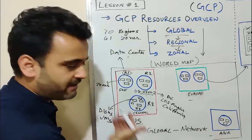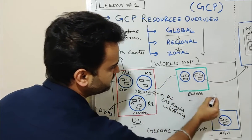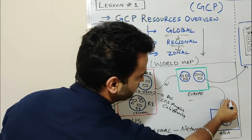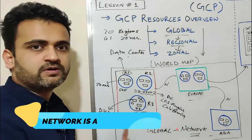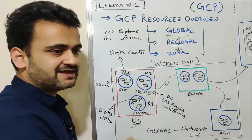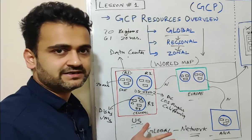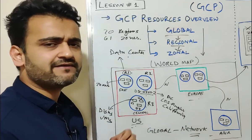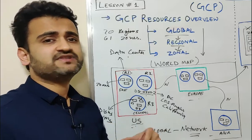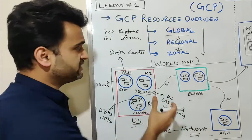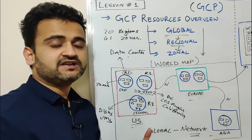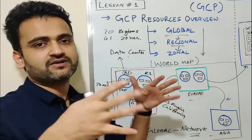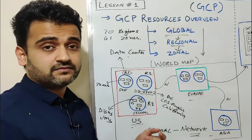Consider this as a world map. The overall network which connects these different services and regions can be a global resource. These networks running across the globe provide that connectivity, so obviously they have to be global in nature. Coming to a regional resource, an example would be a subnetwork. In layman's terms, a subnetwork is a subset of your global network. If your global network connects to regional resources, it divides that network into multiple subnetworks to provide connectivity — breaking down the parent network into multiple child networks. So a subnet is a regional resource.